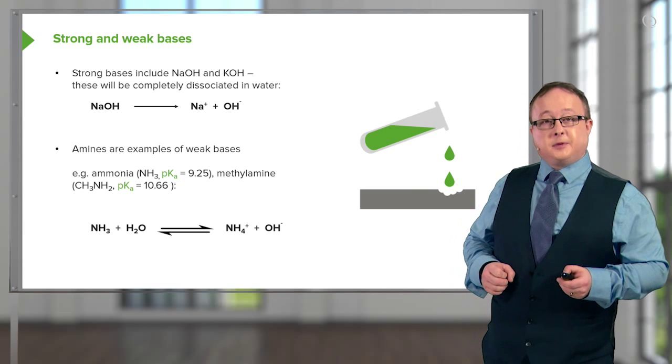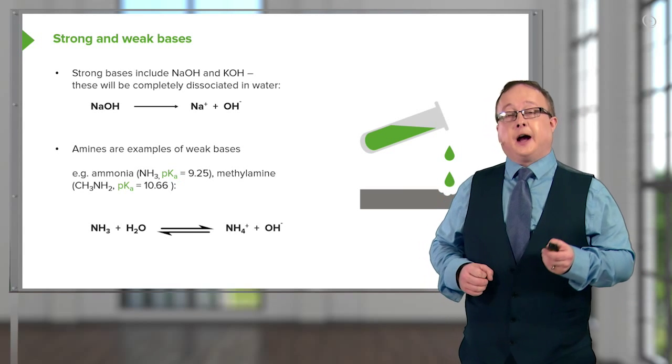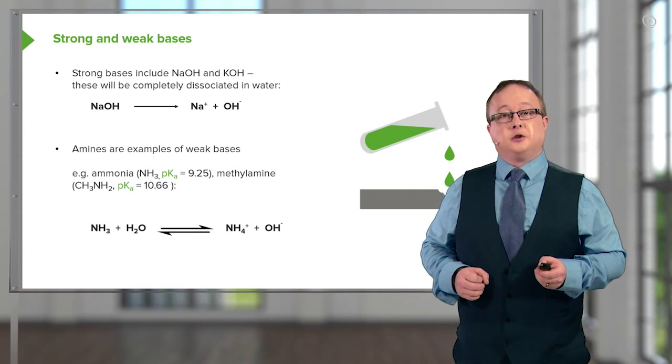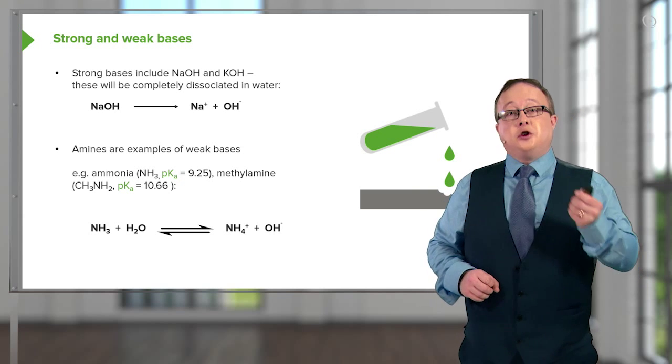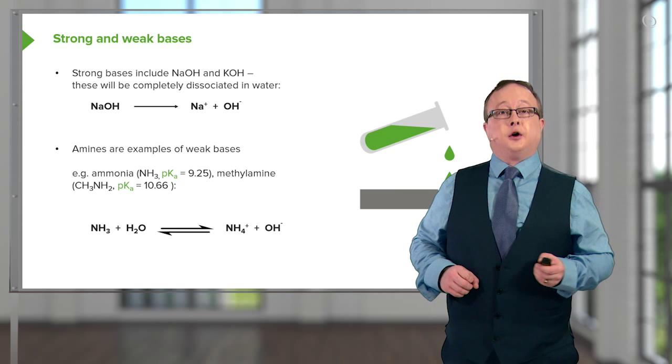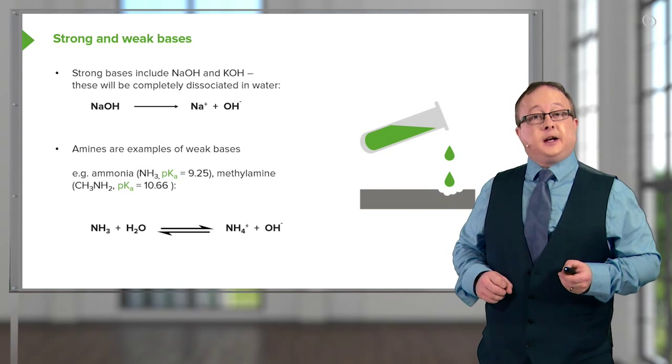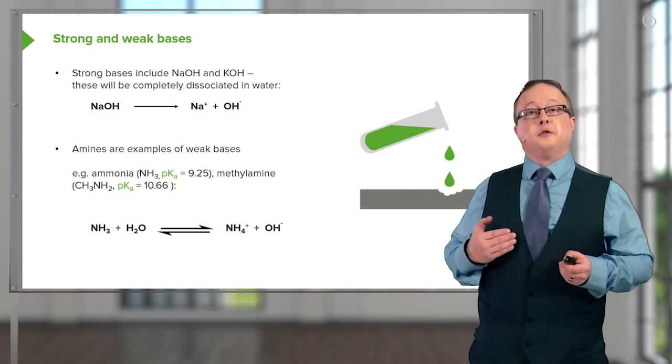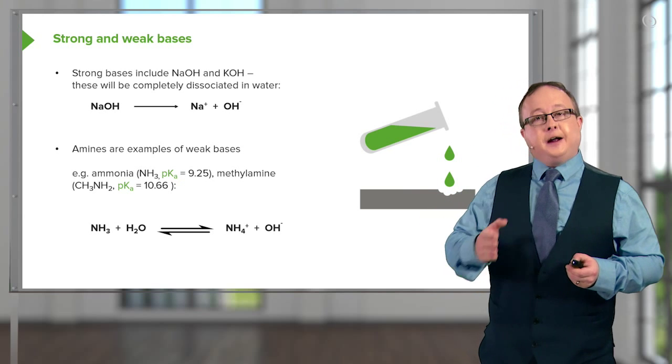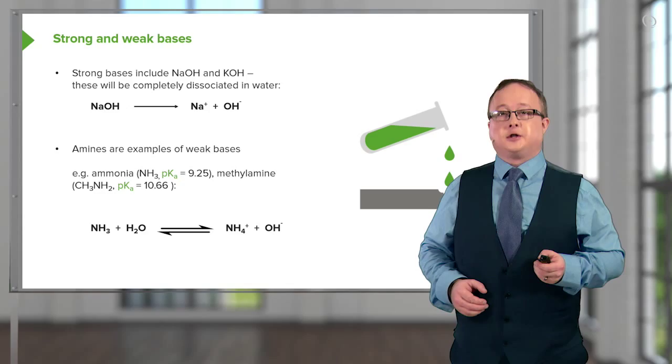And the equilibrium in this particular case for ammonia, and this is how you would form ammonium hydroxide solution, is where we have our base NH3, which is a neutral base, abstracting a proton from H2O to give us NH4+, a complex cation otherwise known as the ammonium ion, and OH-, hydroxide ion.